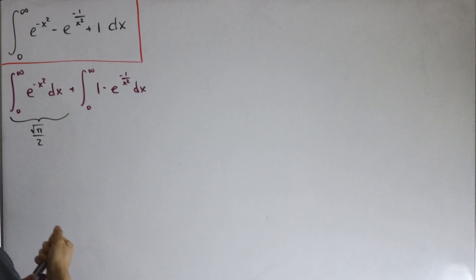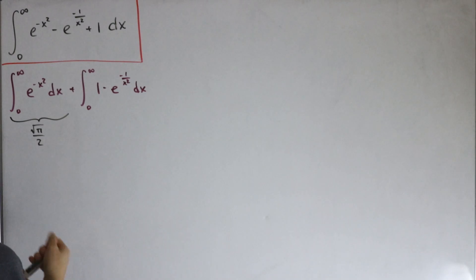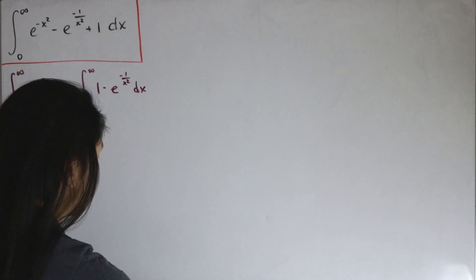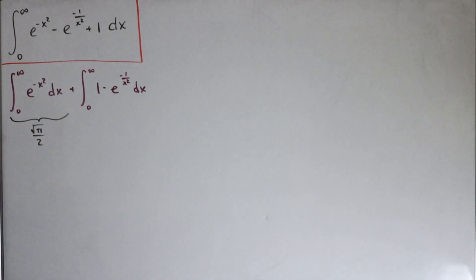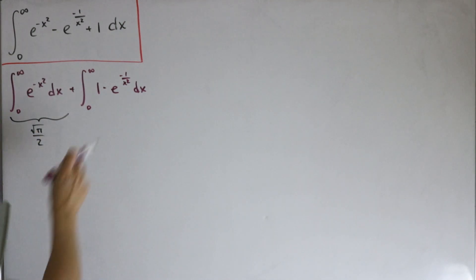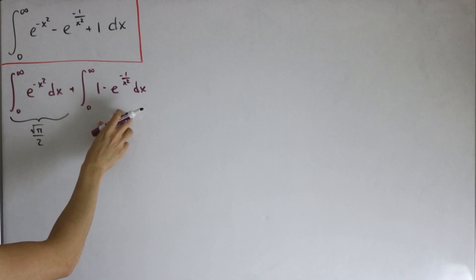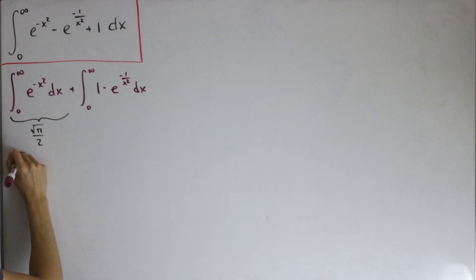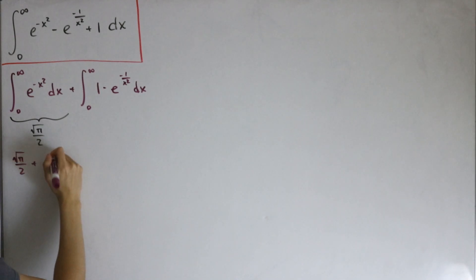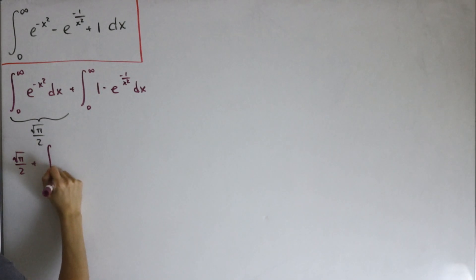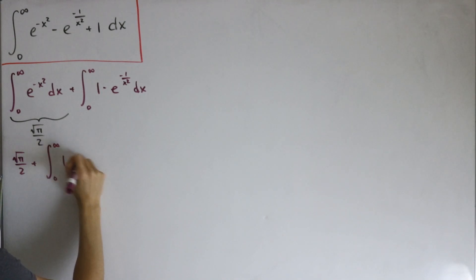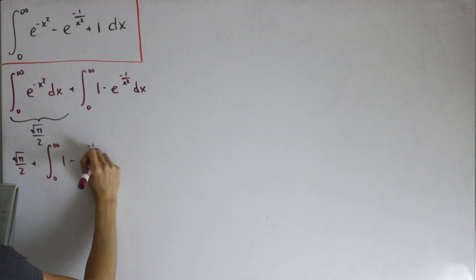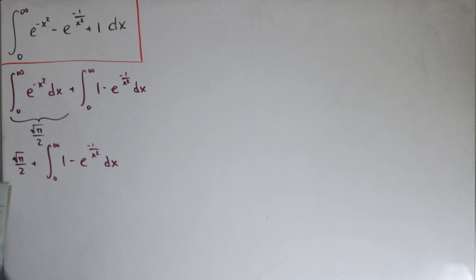If this were over the entire real line that would be square root of pi, but since e to the negative x squared is an even function, we take half that value, giving square root of pi divided by two. So what we have left to solve is the integral from zero to infinity of one minus e to the negative one divided by x squared, dx.